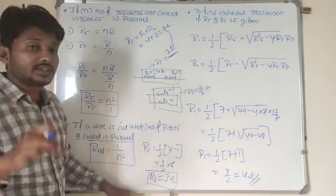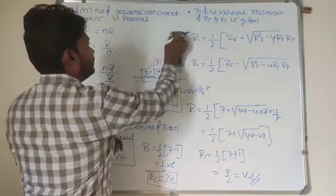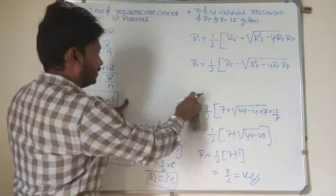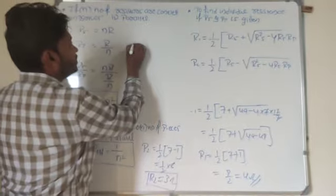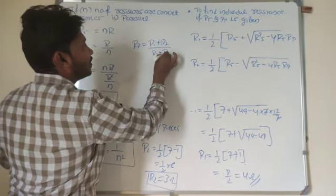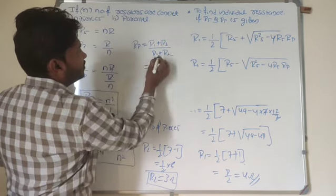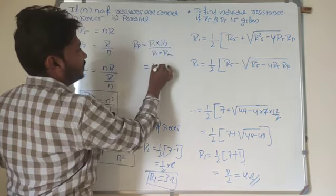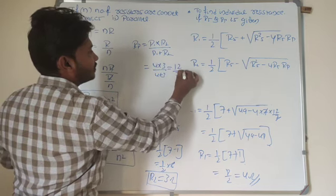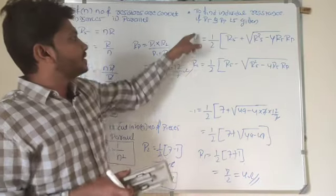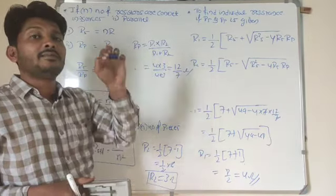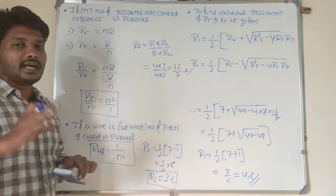We can verify: in series, 4 + 3 = 7 Ω. In parallel, R_p = (R1 × R2) / (R1 + R2) = (4 × 3) / (4 + 3) = 12/7 Ω. This confirms the formula. This is the method to find individual resistance when equivalent resistance in series and parallel are both given.